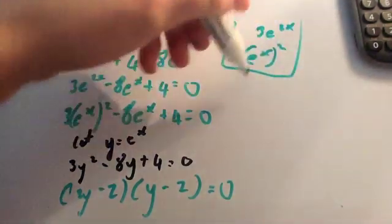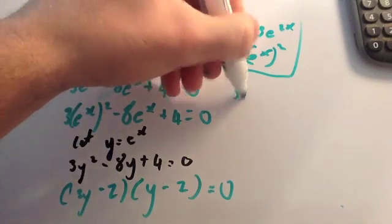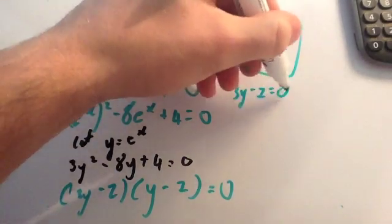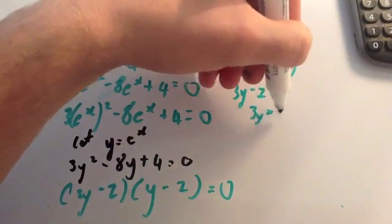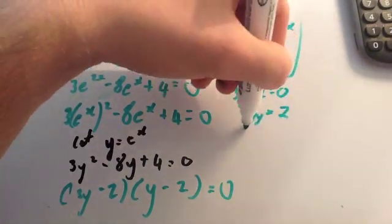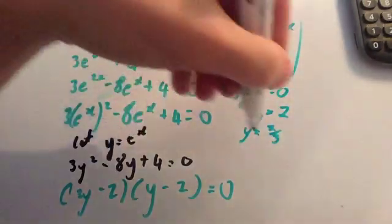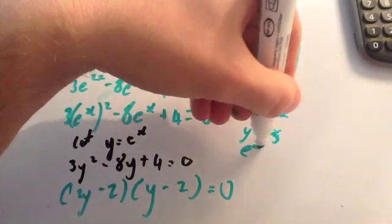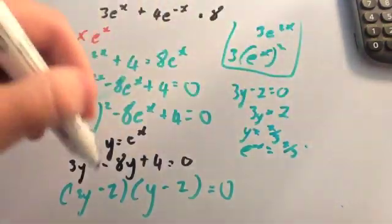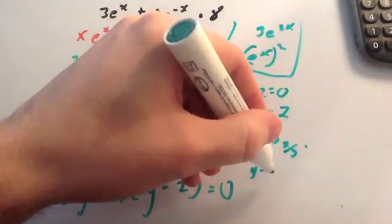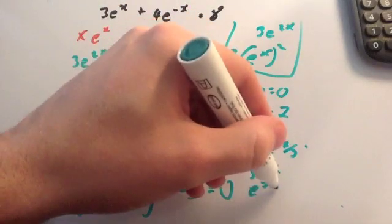So from 3y minus 2 equals 0, we get 3y equals 2, so y equals 2 thirds. And remember, y is e to the x, so e to the x equals 2 thirds. For the other factor, y minus 2 equals 0, giving y equals 2, so e to the x equals 2.